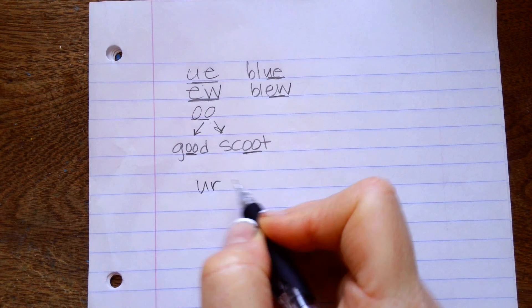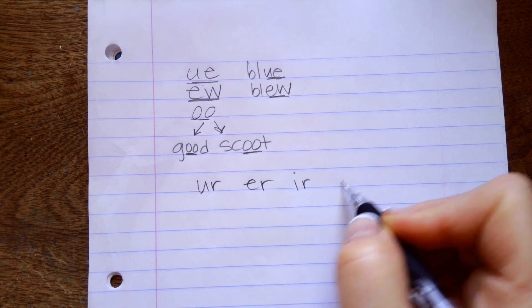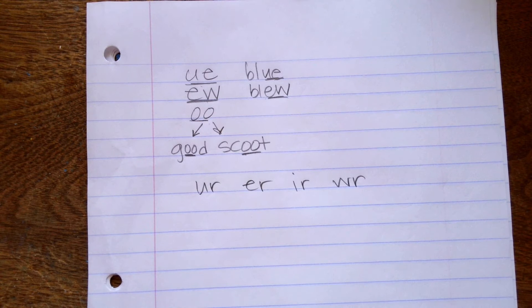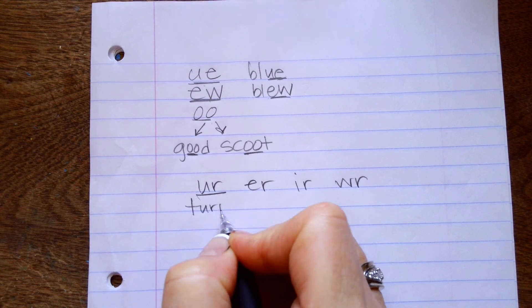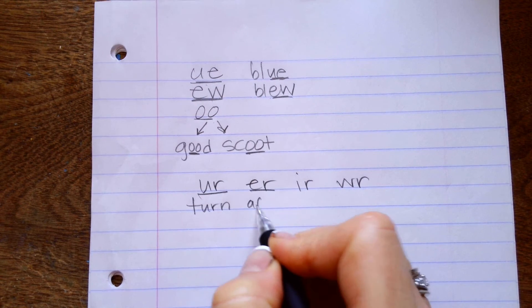Our next ones are UR, ER, IR, and WOR. For some reason, English says that there's a lot of different ways to make the sound R. And here they are. We have UR, like to earn. We have ER, like after. We have IR, like bird.